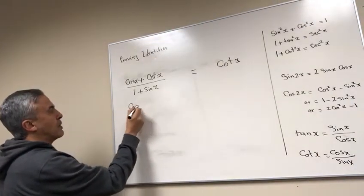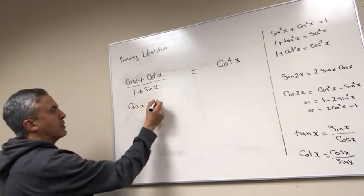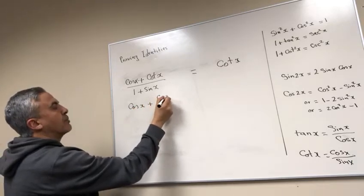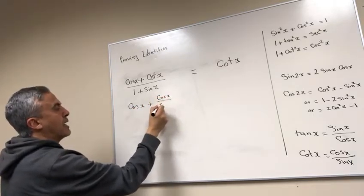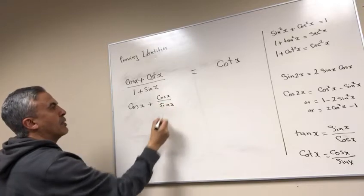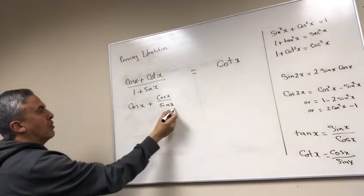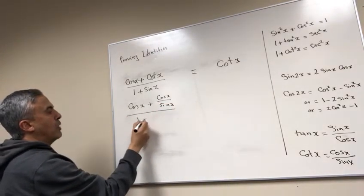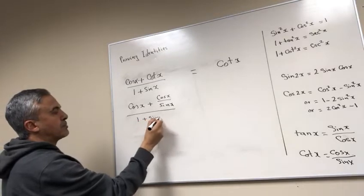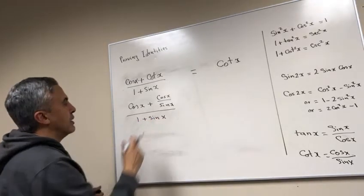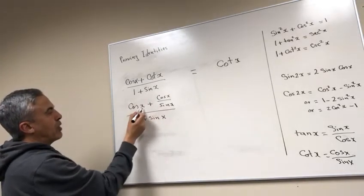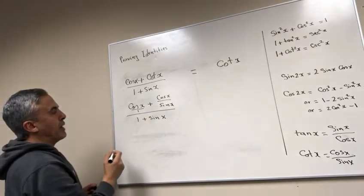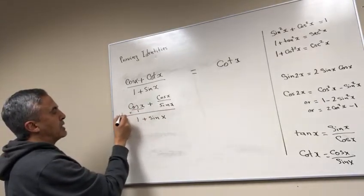And so this becomes cos X plus cosine X over sine X, all over 1 plus sine X. Now here I have to do common denominator, so this is over 1, so I know I'm gonna have to multiply this by sine the bottom.